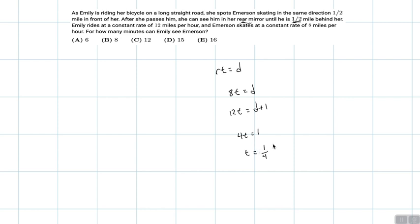And since we're talking about hours, this is a fourth of an hour. A fourth of an hour is, that's just going to be 60 divided by four, which is 15 minutes, which is t. And that's the number of minutes Emily can see Emerson. So therefore answer is choice D.